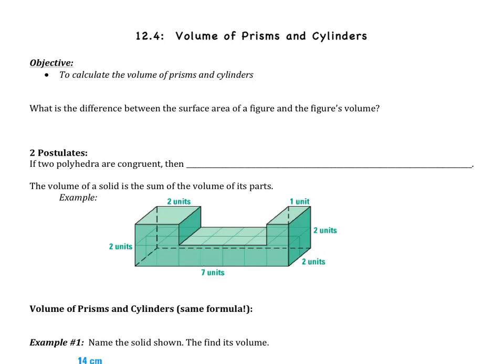Welcome to the fourth section of chapter 12, which is volume of prisms and cylinders. We're finally starting into volume. The first three sections we covered surface area, and the last few sections are all going to be about volume. Today's objective, as you could probably guess, we're going to calculate the volume of prisms and cylinders.